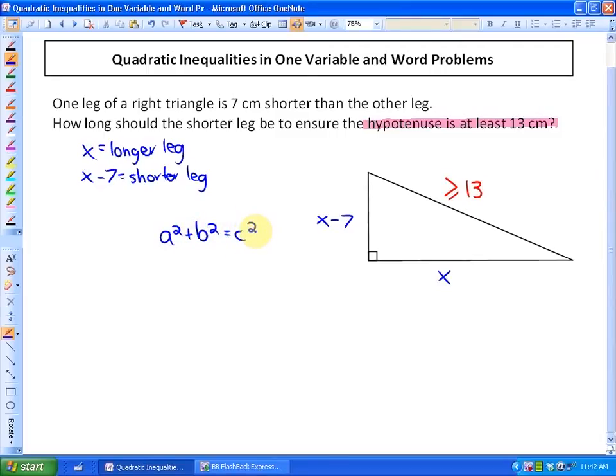Because we used the word at least, it's going to be an inequality. It didn't say exactly 13 cm. So the inequality here would be x squared plus (x minus 7) squared is greater than or equal to 13 squared. If you had the inequality sign incorrect, the nice thing is that later on we can think about the context.